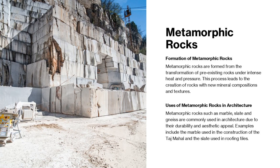Metamorphic rocks are formed through the transformation of existing rocks under intense heat and pressure, leading to the creation of rocks with new mineral compositions and textures. Rocks such as marble, slate and gneiss are commonly used in architecture due to their durability and aesthetic appeal. Examples include the Taj Mahal and the slate used in roofing tiles.